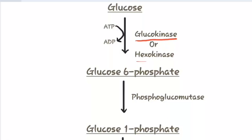First of all, glucose in the presence of the enzyme glucokinase or hexokinase gets converted into glucose-6-phosphate. Here one molecule of ATP gets converted into ADP, thus energy is required. Now if glucose is present in the liver, then the process is catalyzed by glucokinase.